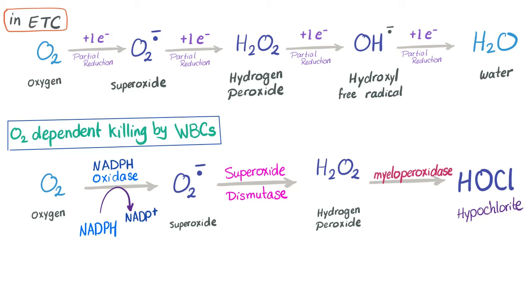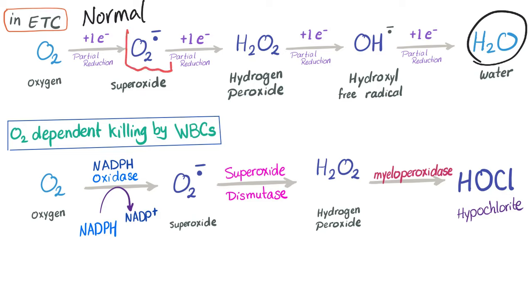Adding another electron produces the hydroxyl free radical. One more partial reduction gives us water. All of these steps occur in the electron transport chain and are completely normal — water is harmless. However, these three compounds — superoxide, hydrogen peroxide, and hydroxyl free radical — are free radicals. If left alone in their free radical status, they can damage our cells. But since they can damage cells, why not use them to damage bacteria?